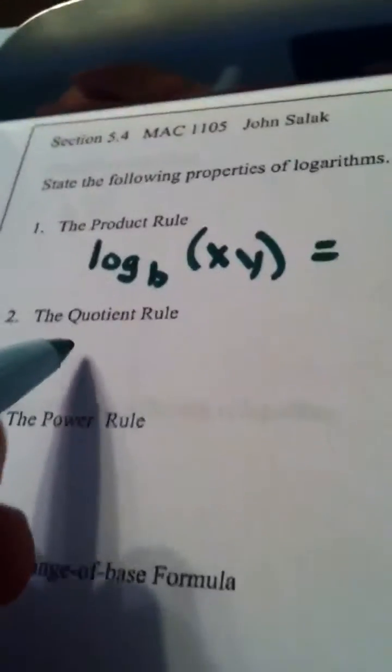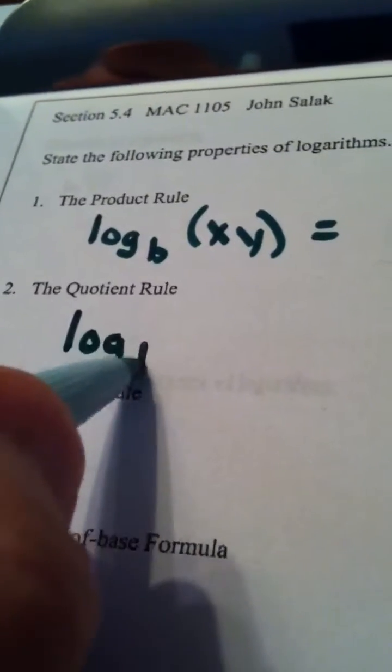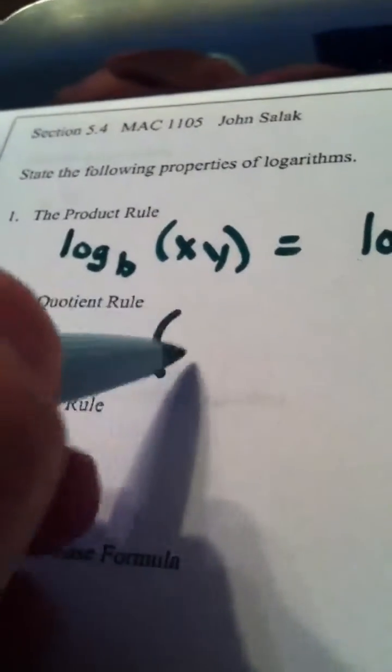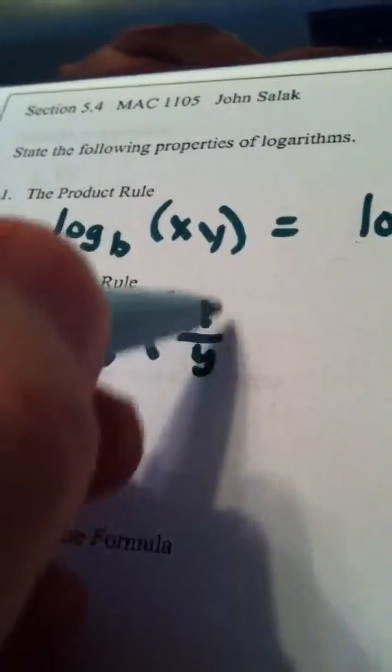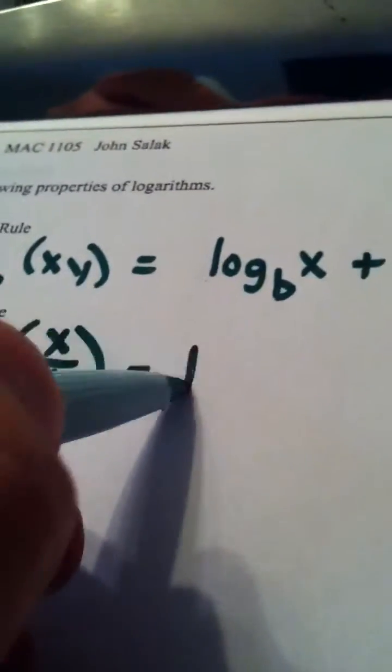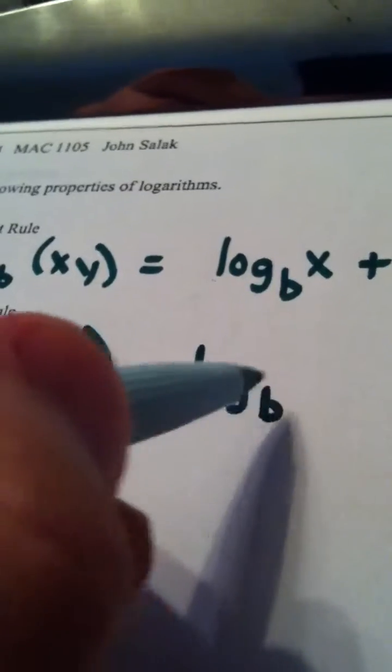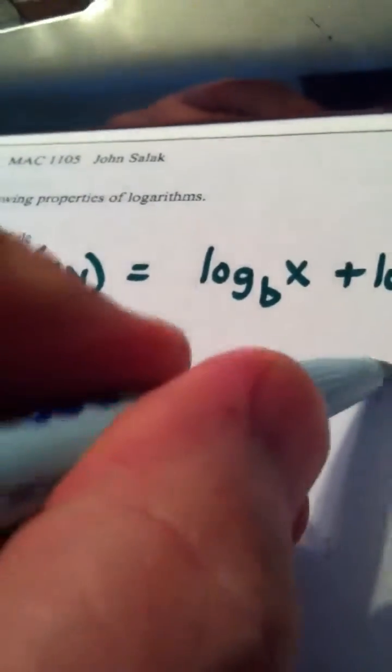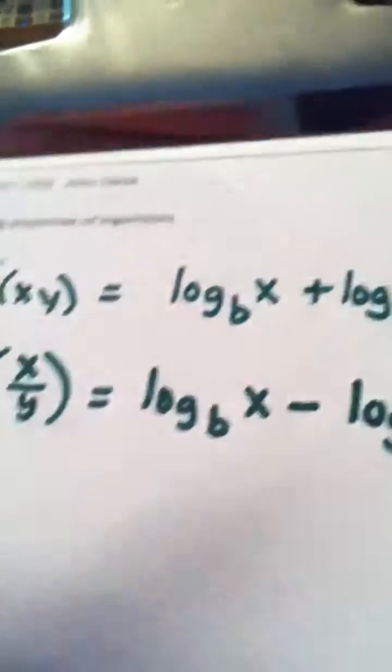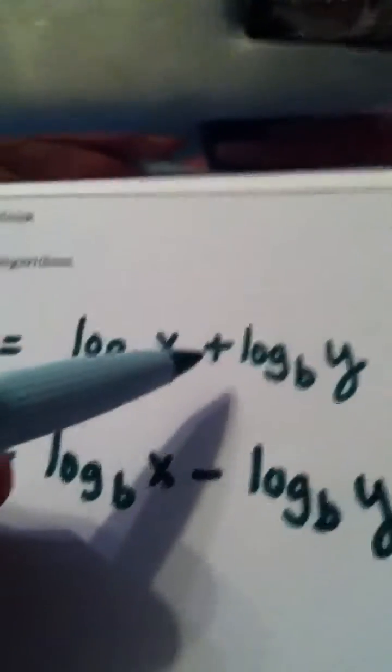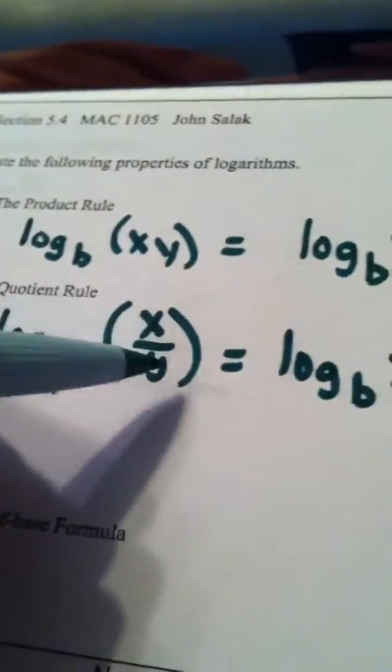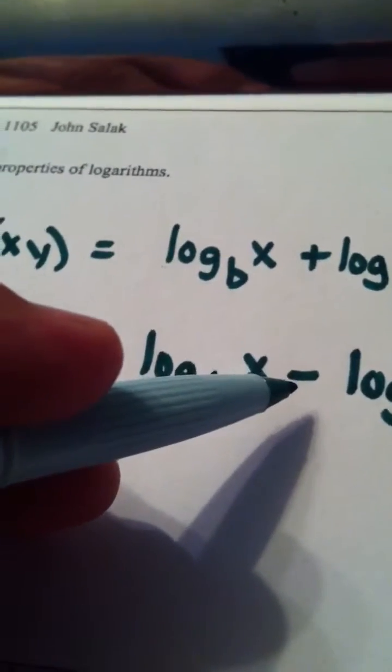The quotient rule says when you have a log function and you're putting in a quotient, you're going to get out a subtraction problem. It's log base b of x minus log base b of y. So when a product goes in, a sum comes out; when a quotient goes in, a difference comes out.